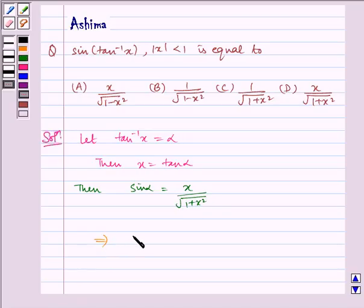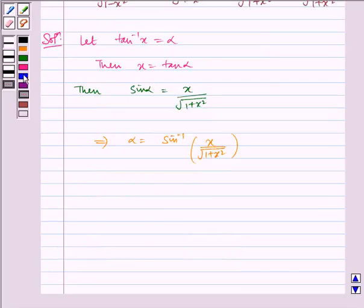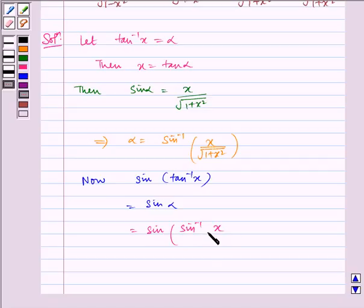Which implies α = sin^(-1)(x/√(1+x²)). Now sin(tan^(-1)x) = sin α = sin(sin^(-1)(x/√(1+x²))) = x/√(1+x²).